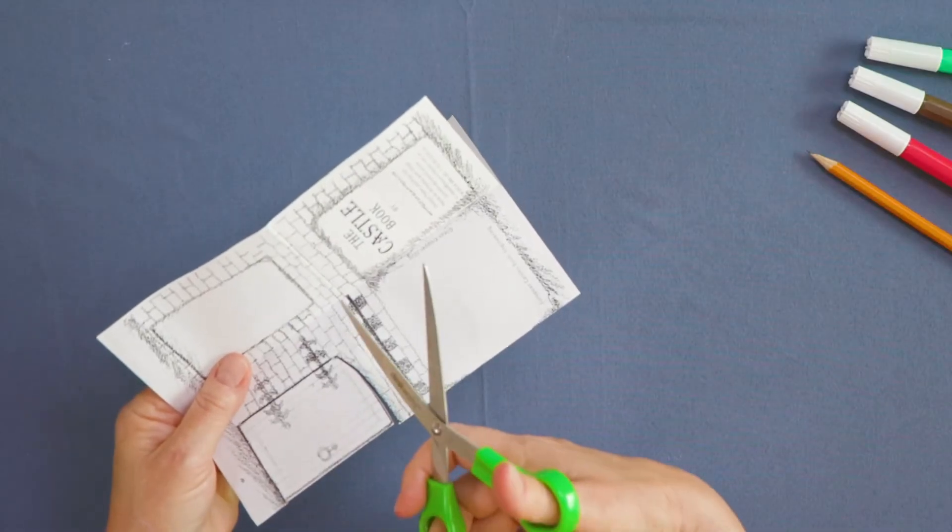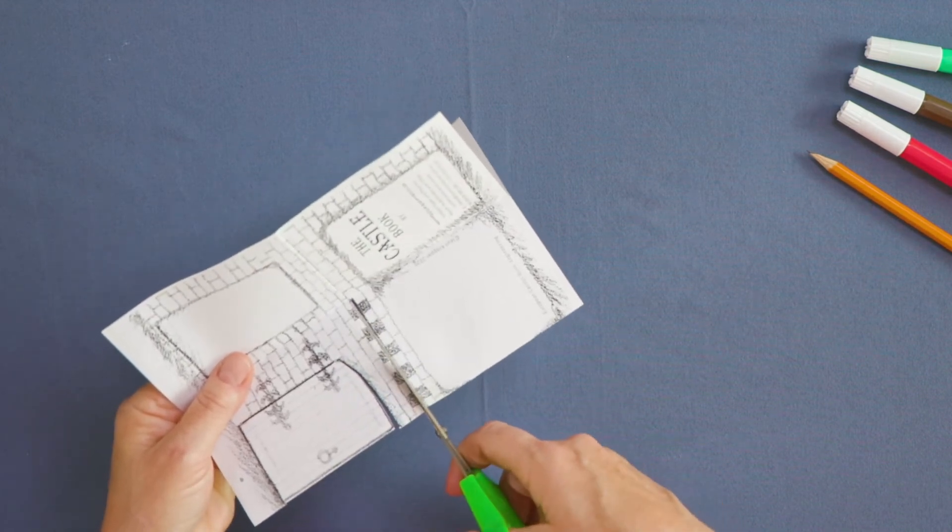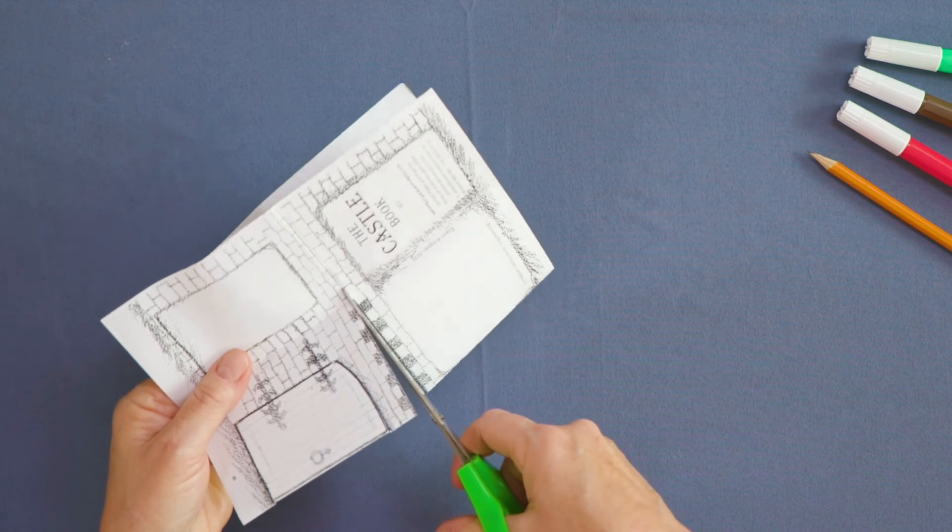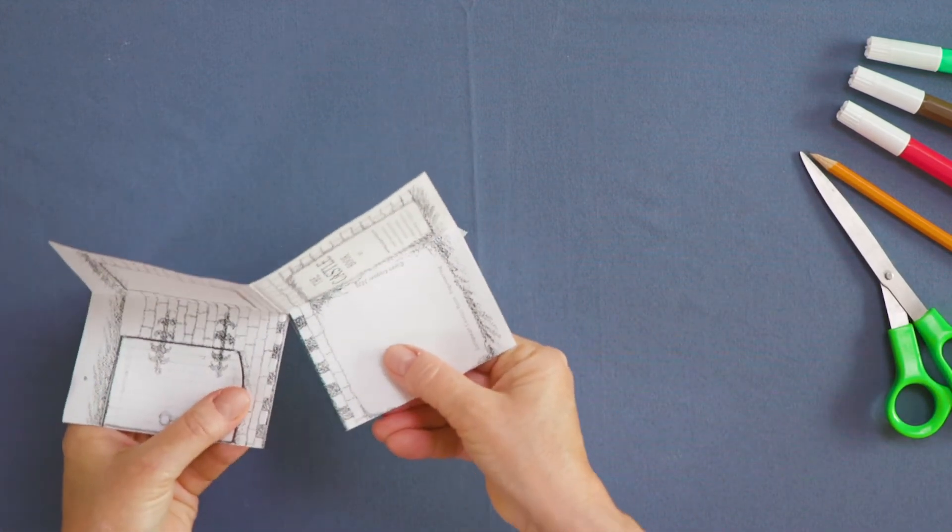Make a cut along the center black line to just pass the fold. Hold the template on either side of the cut. Pull the cut apart while rotating your thumbs away from each other.